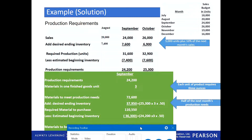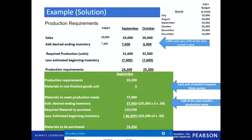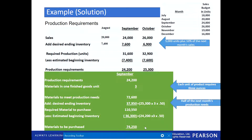Subtract beginning inventory. What is the beginning inventory of material for September? It is the ending of August. Ending of August material inventory = 24,200 (September production need) × 3 × 50% = 36,300 ounces. So: total material needed minus beginning inventory (36,300) gives the quantity of material to purchase. This is the quantity of material we need to purchase.